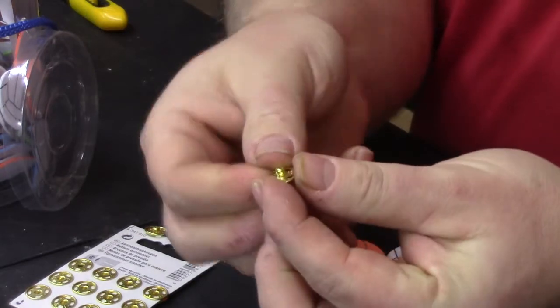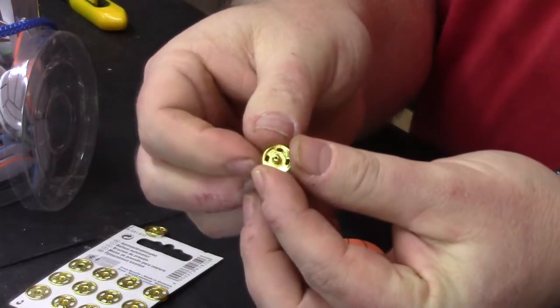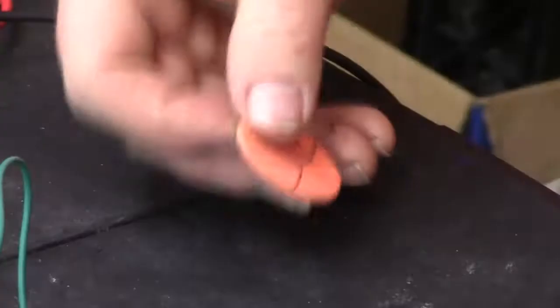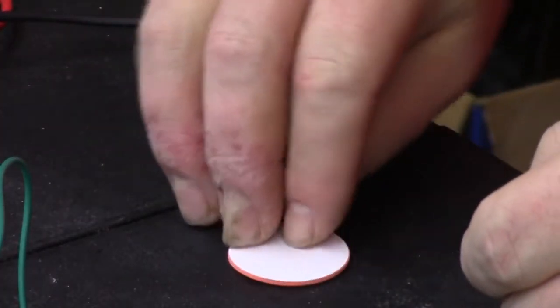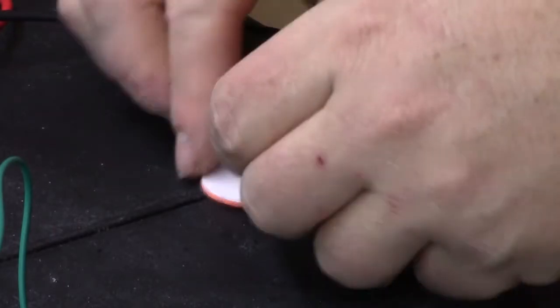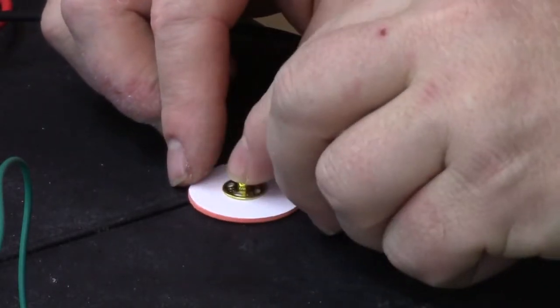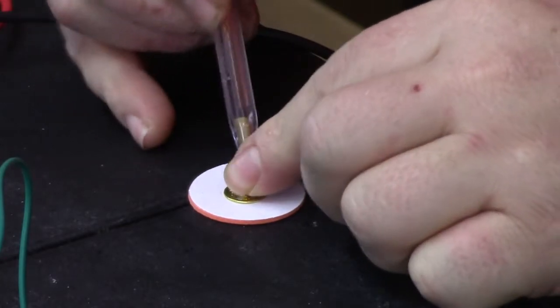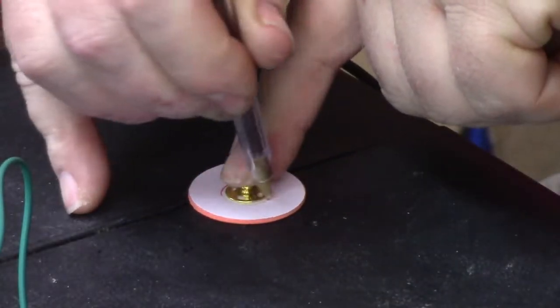I put the snap in the middle of a peel and stick backing, and I trace the outline.